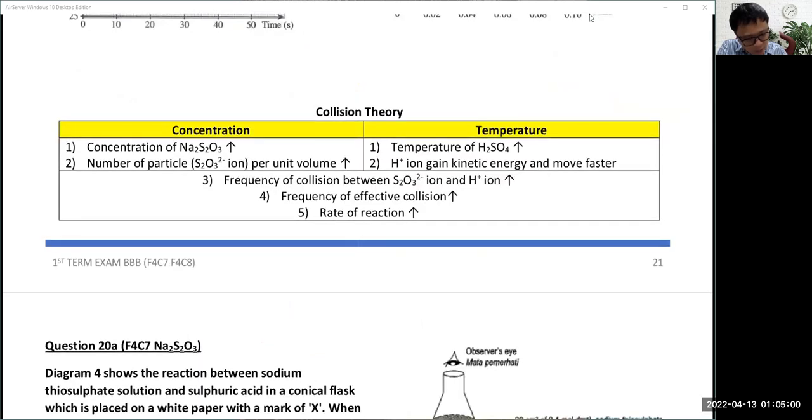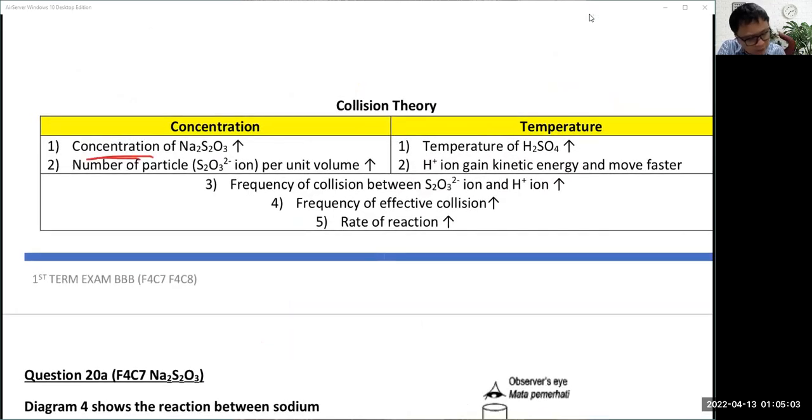Then, the collision theory is very simple. It's about concentration. Particle per unit volume is higher. We cancel the H+, then the ion is the thiosulfate ion. When temperature is higher, hydrogen will gain the energy and move faster like this.